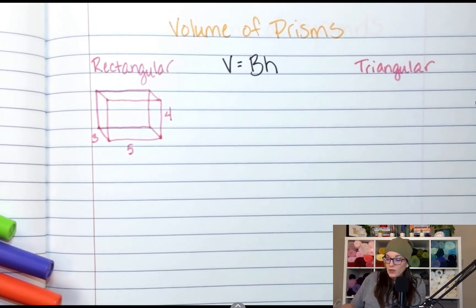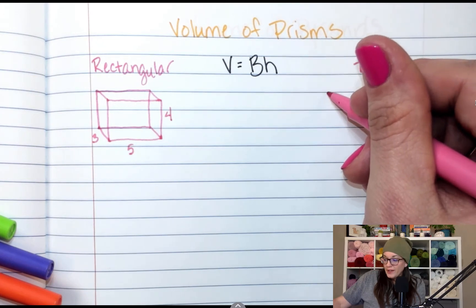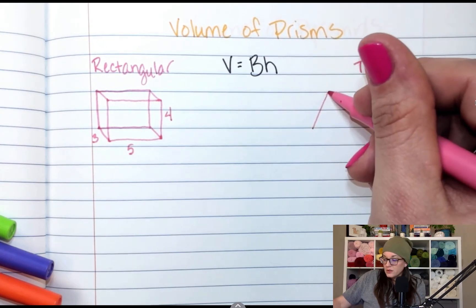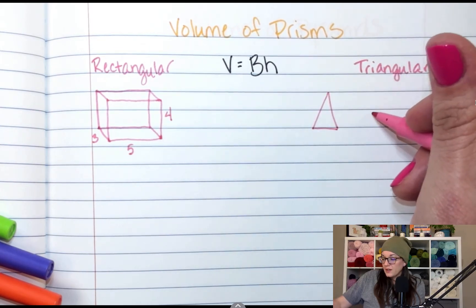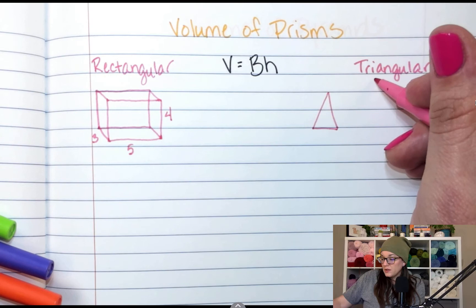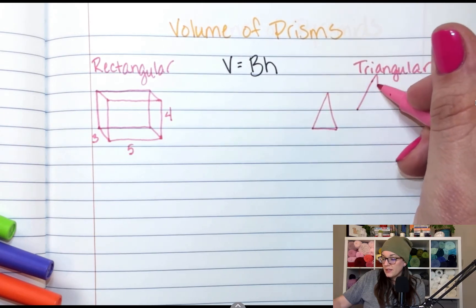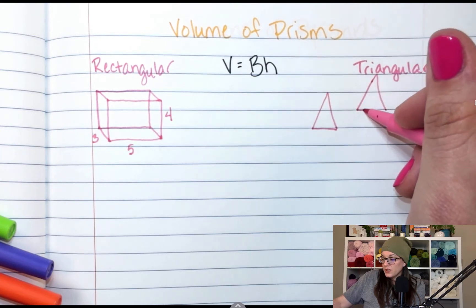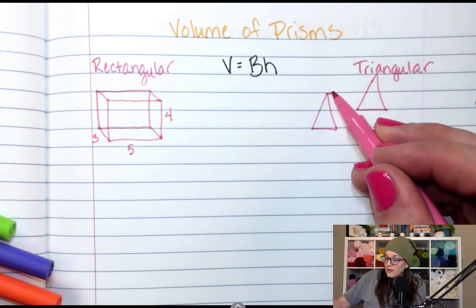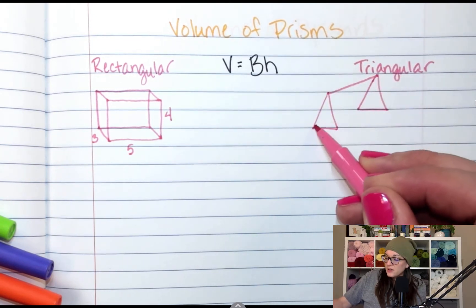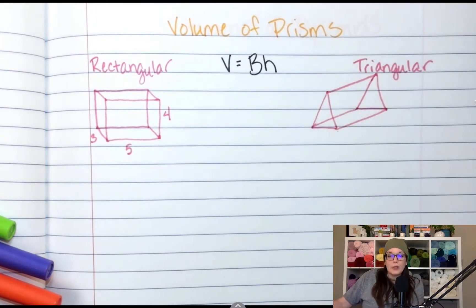Now, my triangular prism, we're going to draw it kind of the same. We draw the base, a triangle, and then we go off to the side, down a little bit, up a little bit, we'll go up a little bit on this one, draw another triangle, because the triangle is the base. So we have two triangular bases. And then we connect the vertices to make a triangular prism.